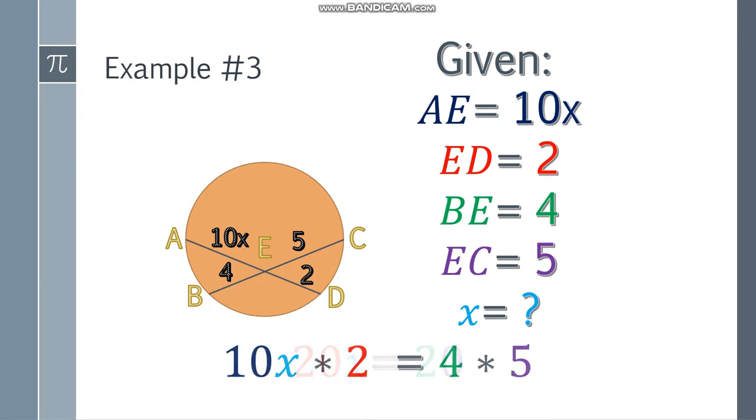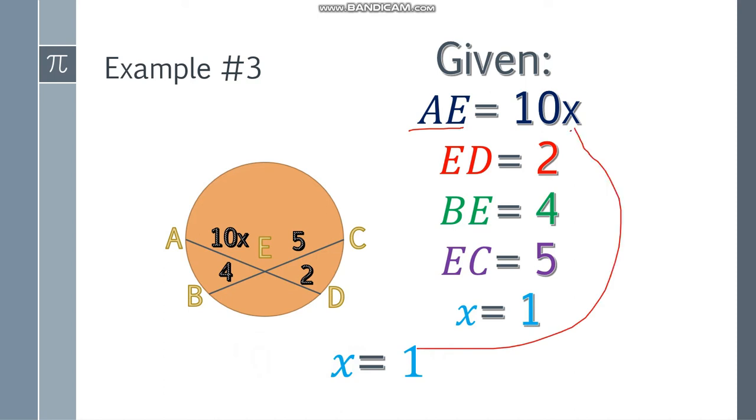Simplify: 10X times 2, that will be 20X, and 4 times 5, that will be 20. The value of X, to get that, divide both sides by 20, and you will get an answer of X is equal to 1. So we found the value of X. Just in case you're asked the value of AE, substitute the value of X here. So 10 times 1 is 10. Moving on.